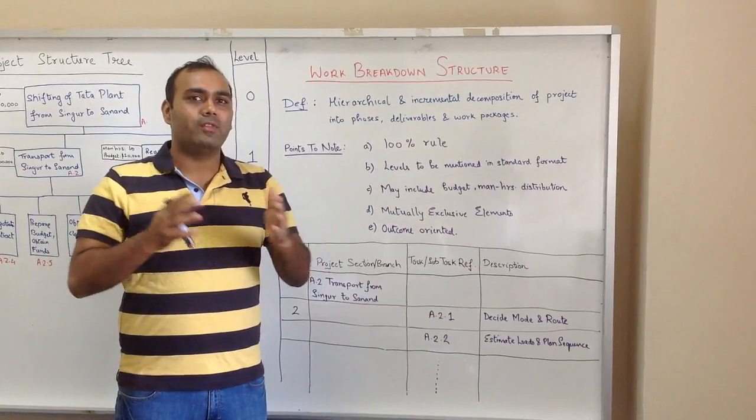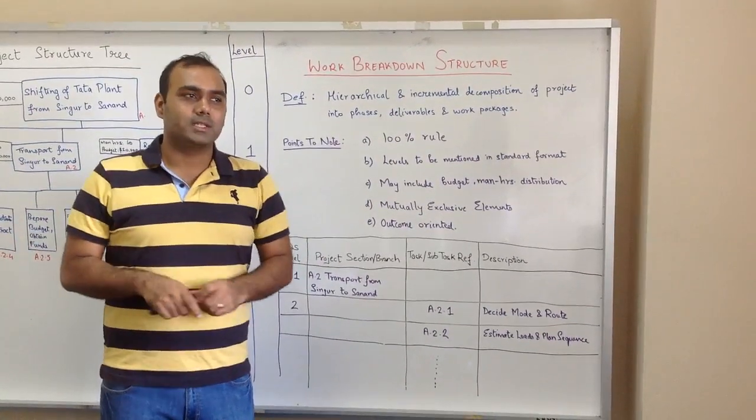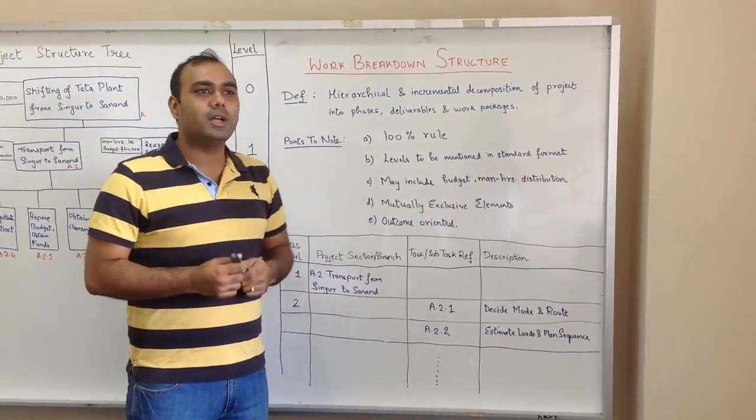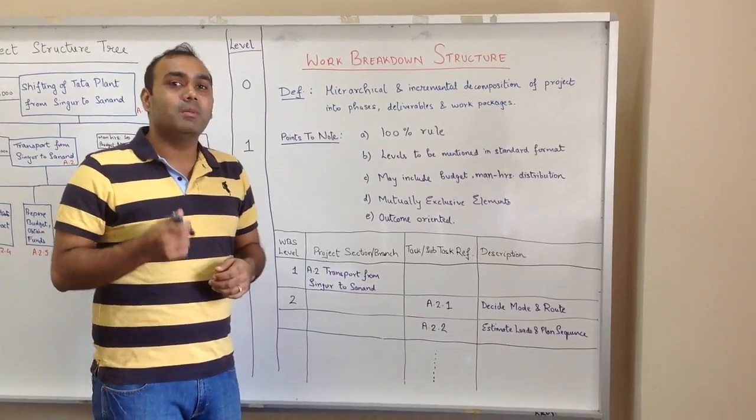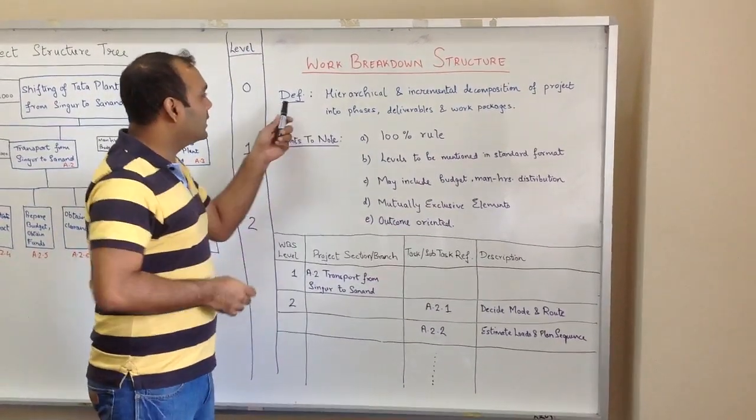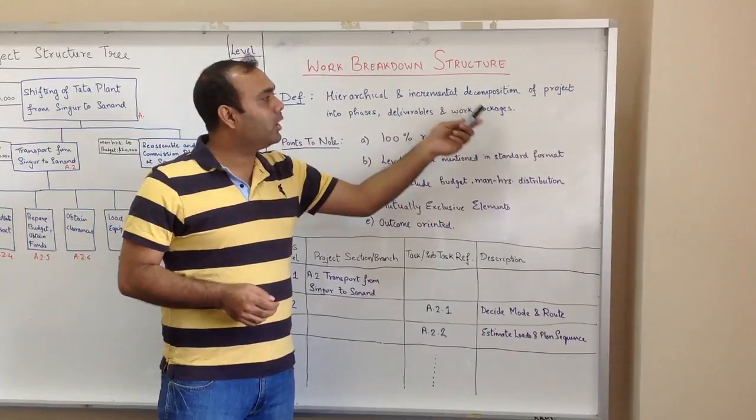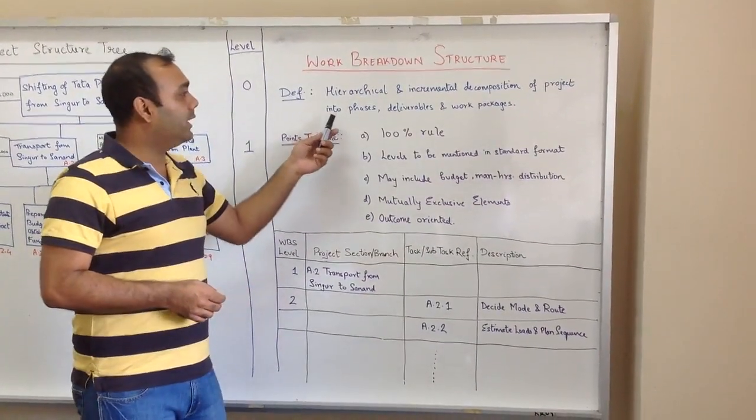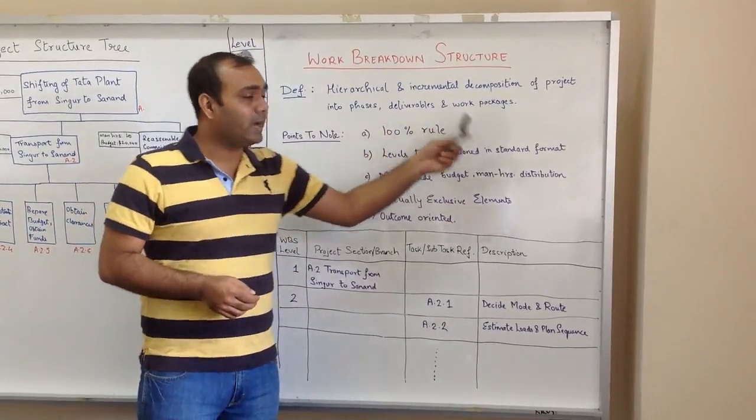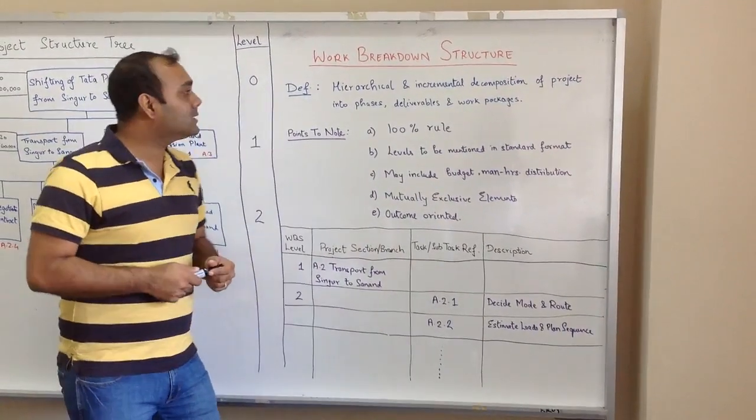Work Breakdown Structure, as defined by PMI (Project Management Institute), is a hierarchical and incremental decomposition of a project into phases, deliverables, and work packages. What this means is that there should be a certain hierarchy.